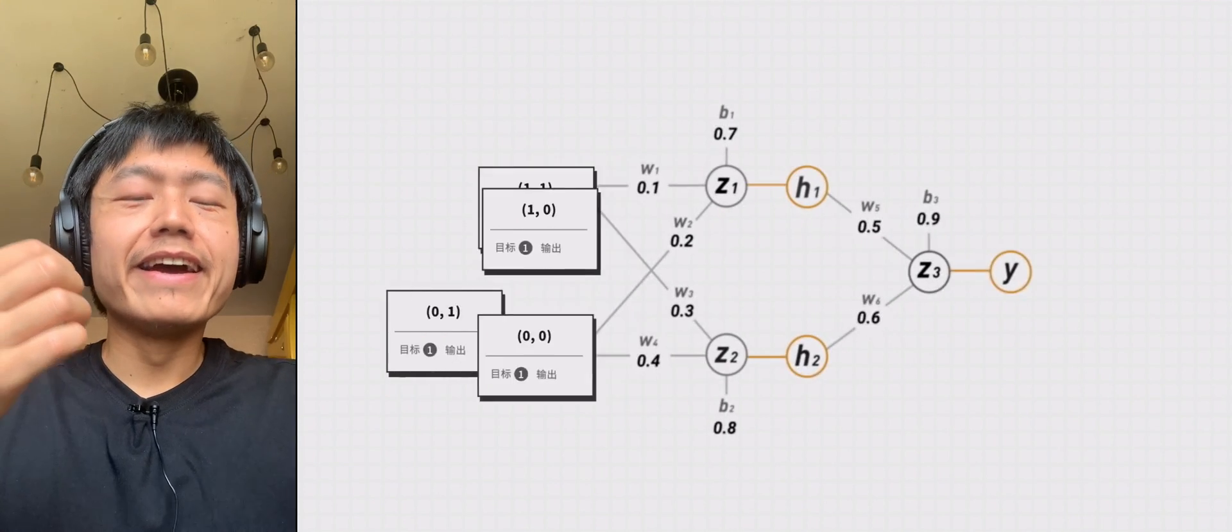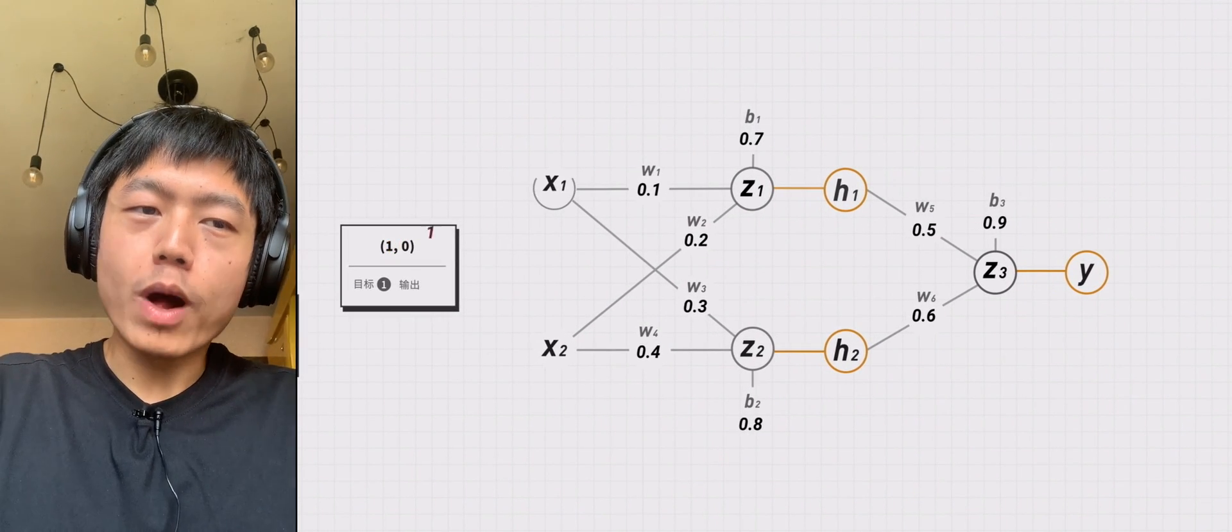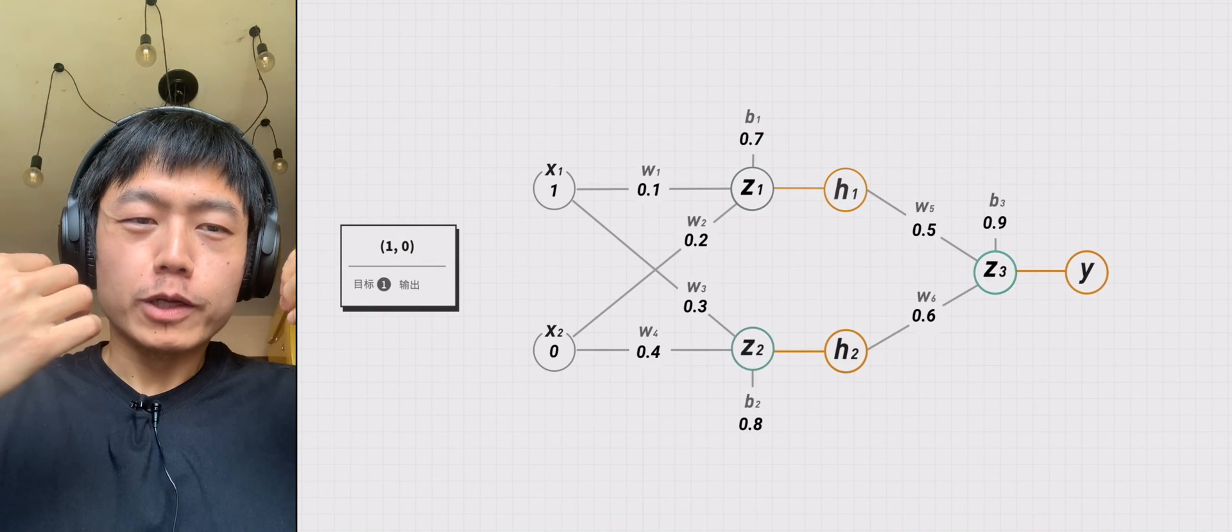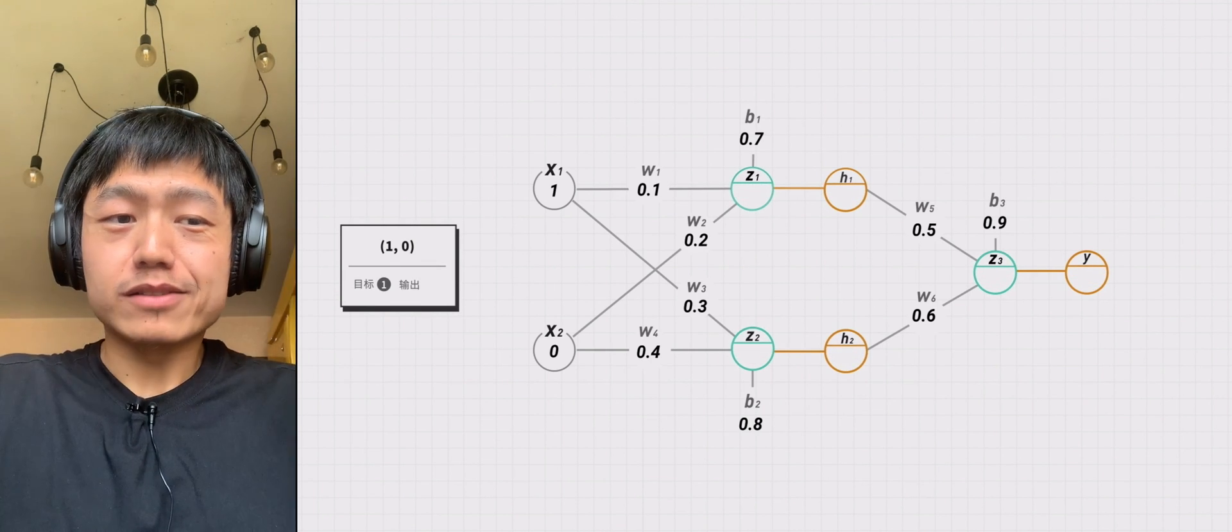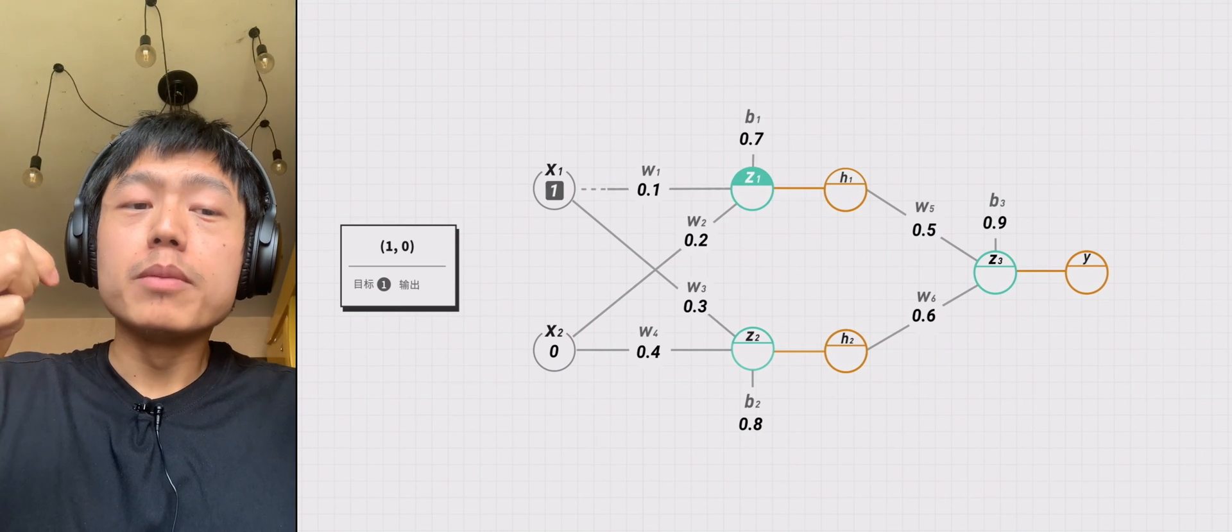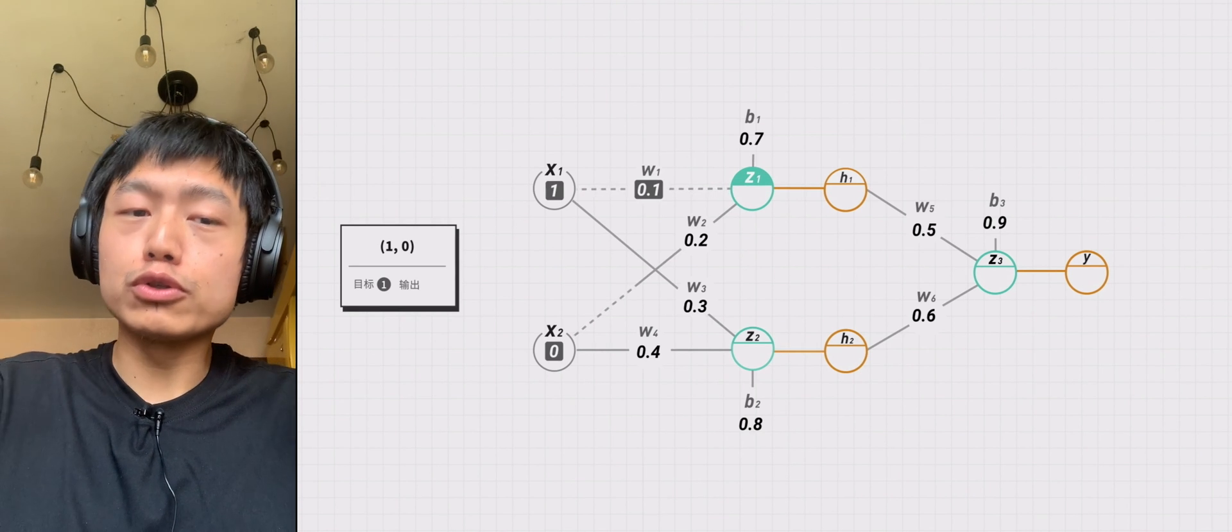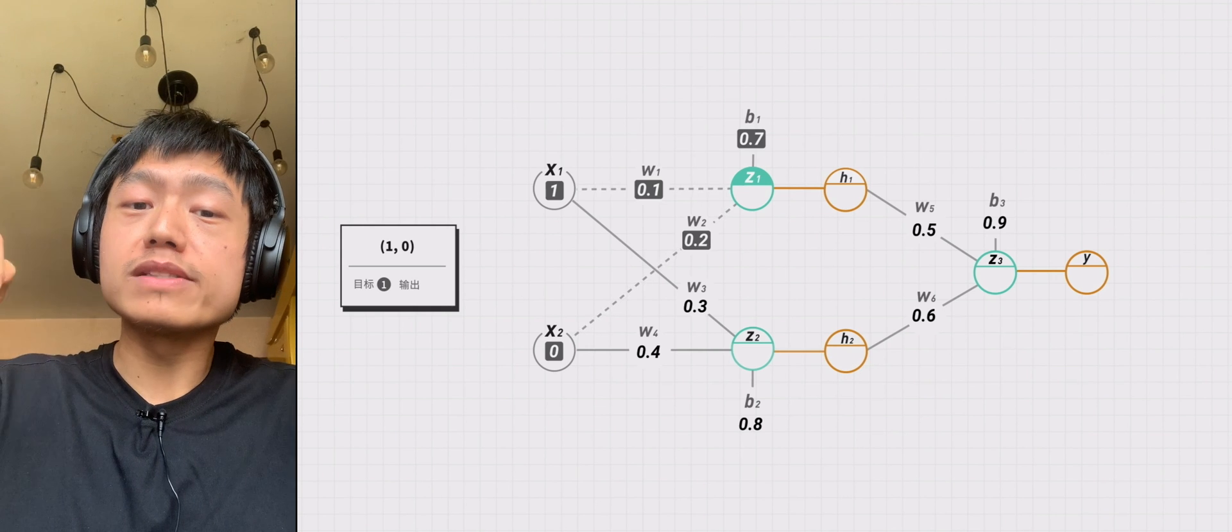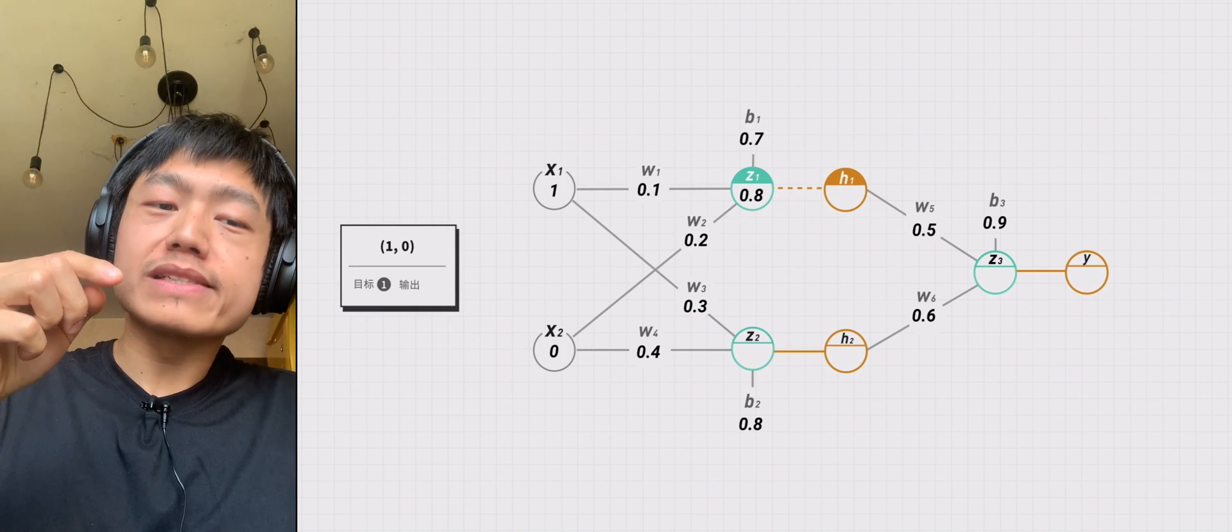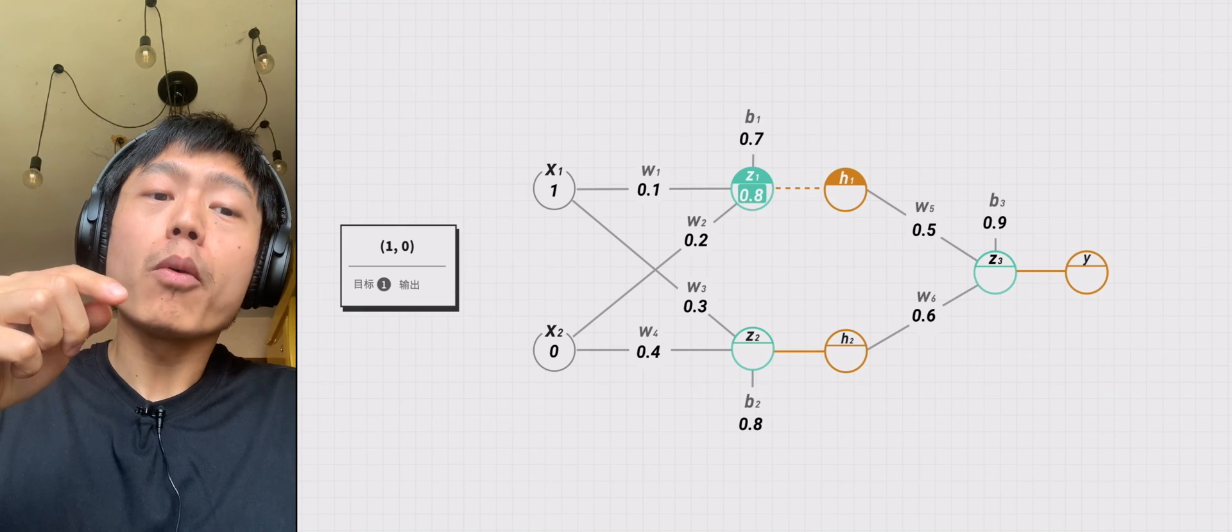At this point, input x1 equals 1 and x2 equals 0. Then we can fill in all the blanks. z1 equals x1 times w1 plus x2 times w2 plus b1 equals 0.8. h1 equals sigma z1 equals 0.69.